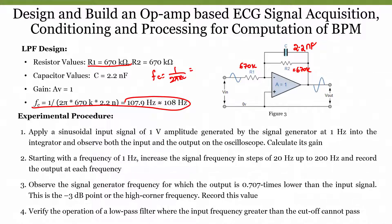Considering the availability of resistors and capacitors, we are designing a first-order low pass filter with a cutoff frequency of 108 Hz. Since R1 and R2 resistors are equal and it is an inverting amplifier, the gain is R2/R1, which gives a gain of 1. So whatever input we get, we will get the same amplitude at the output.